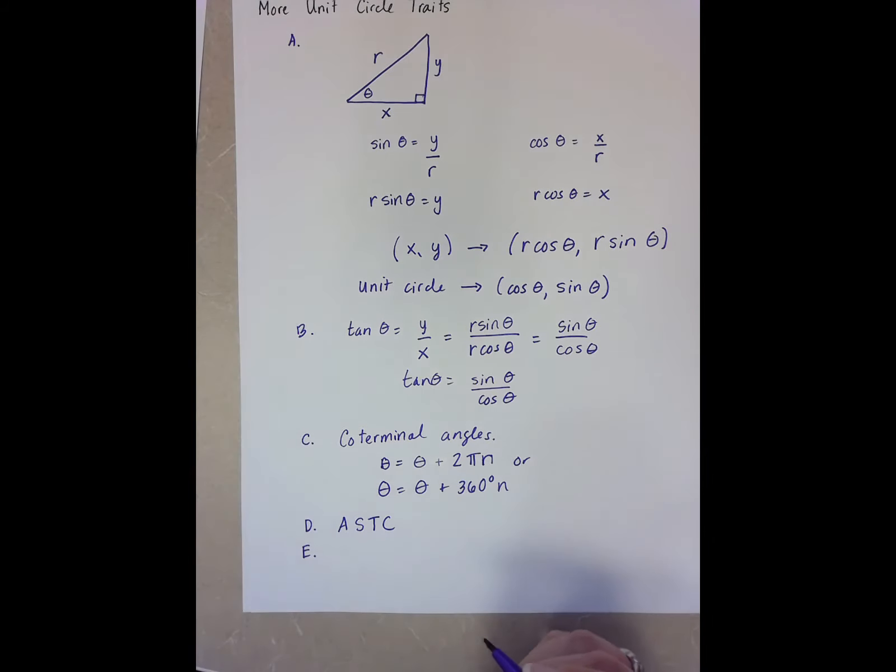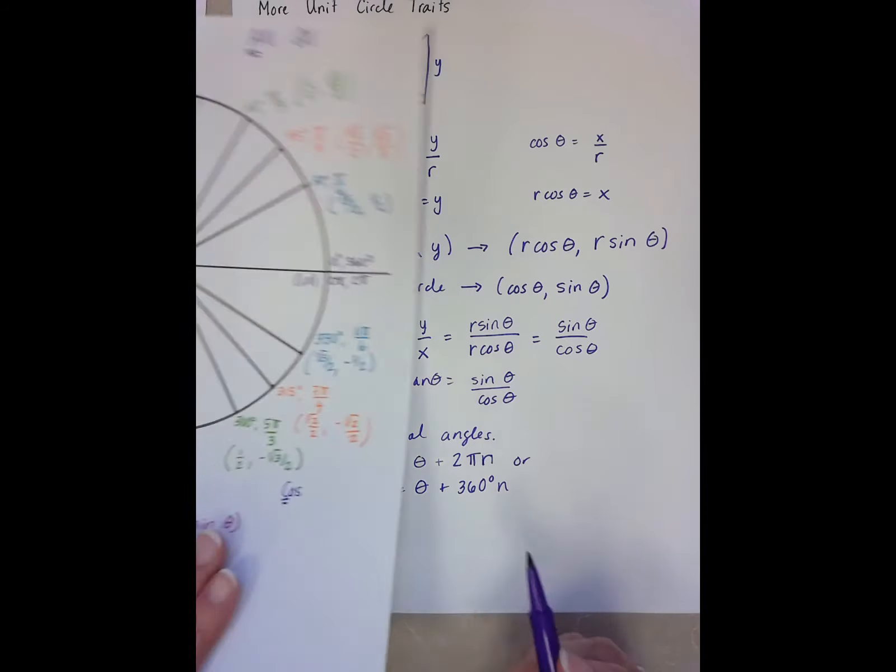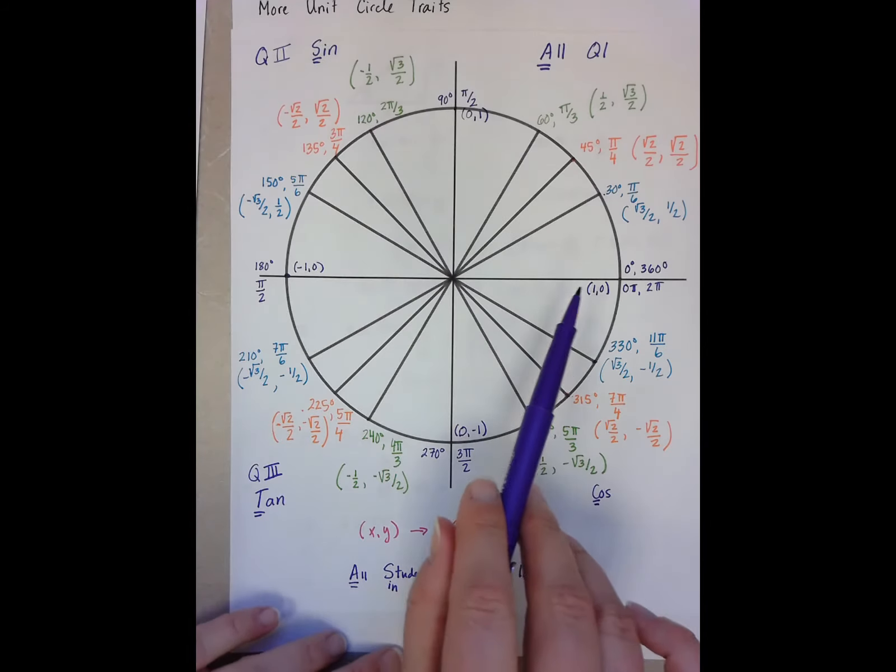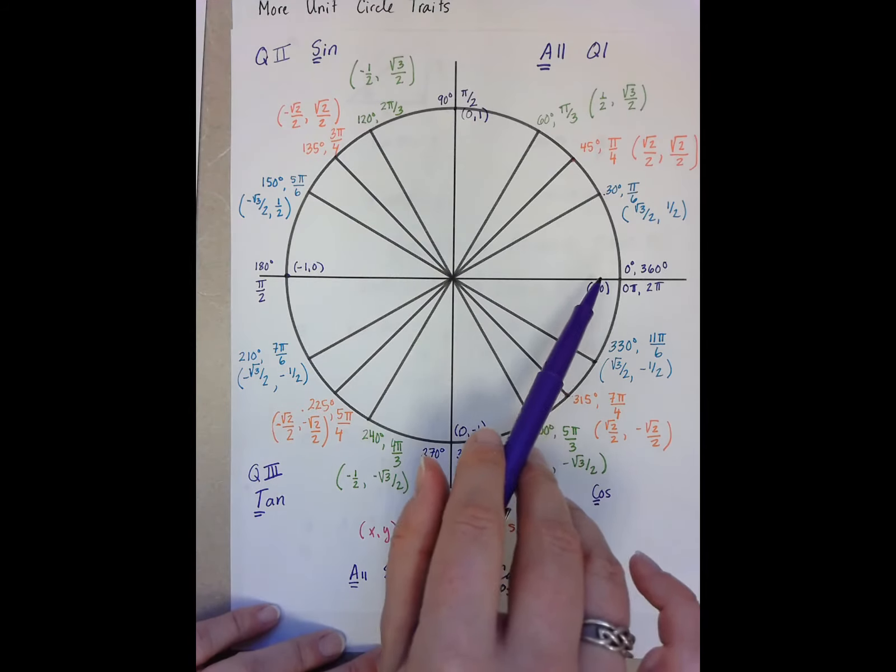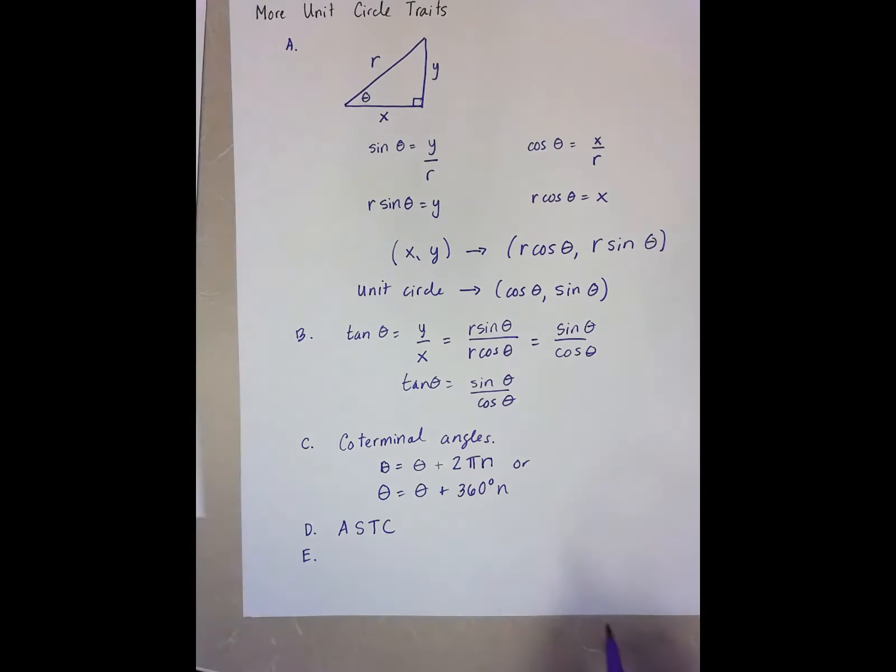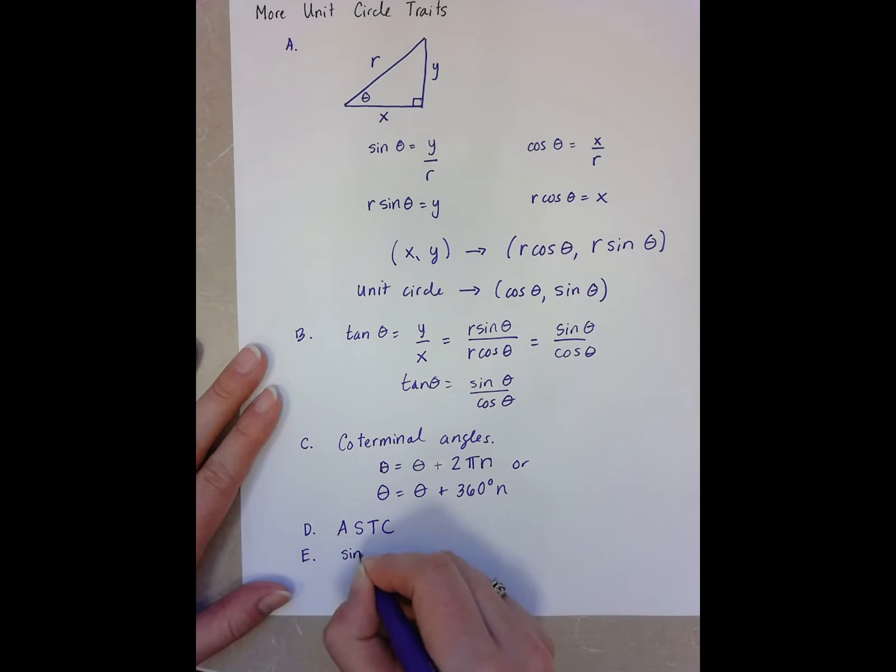The last thing we need to talk about is some of the relationships between sine and cosine. So we know what happens when we have sine of an angle, but we'd really love to also know what happens when we have sine of a negative angle and cosine of a negative angle.